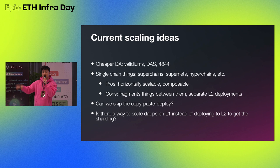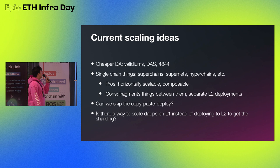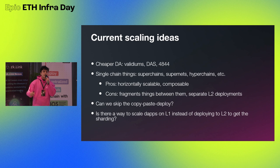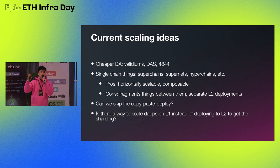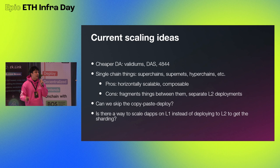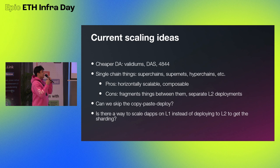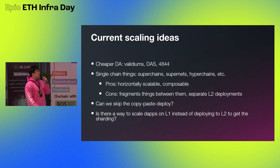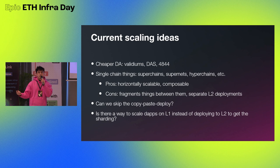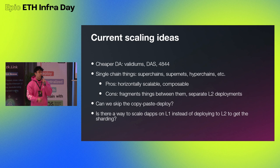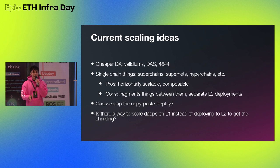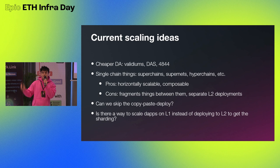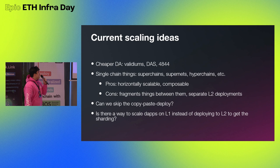Current scaling ideas popular recently include validiums, alternate data availability layers, plasmas — which seem to be back — and EIP-4844, which opens up more data for Ethereum with a different fee market. Many rollup teams are working on creating a composable shared network of horizontal L2s that share the same security and the same bridge — things like the Superchain, Polygon CDK, and ZK Sync's similar efforts. We do need multiple L2s to scale Ethereum, and ideally those L2s share the same security model rather than having many different bridges and security mechanisms.